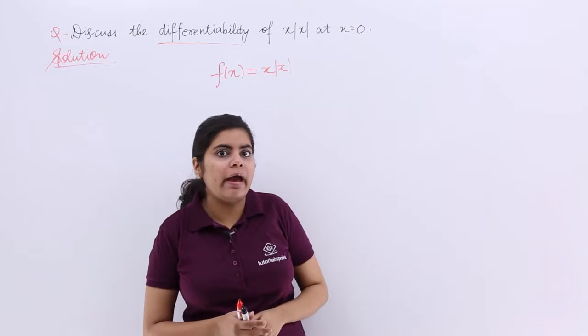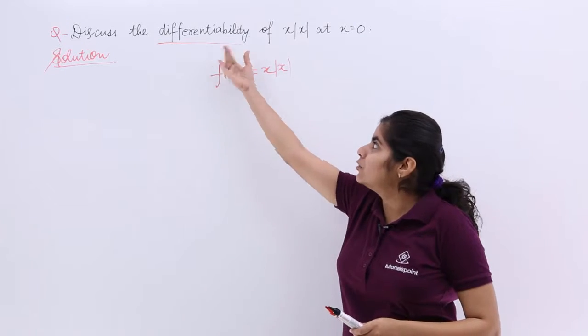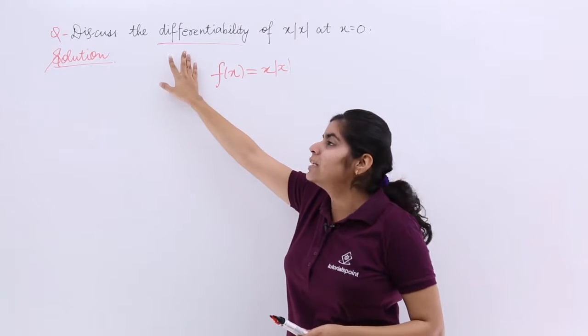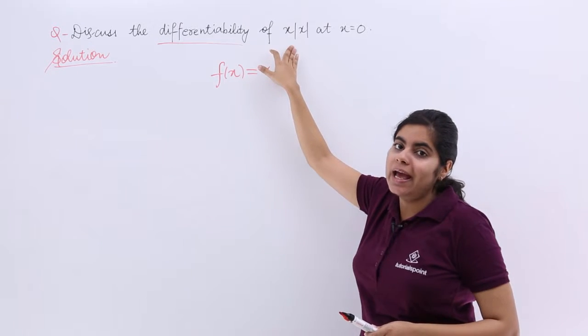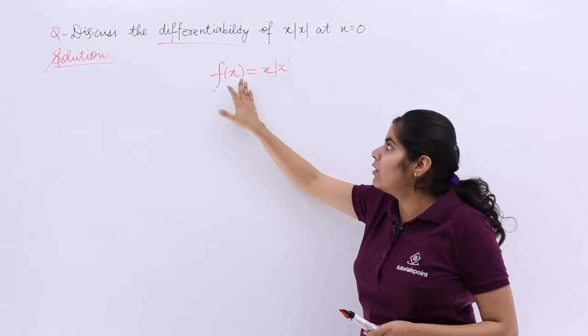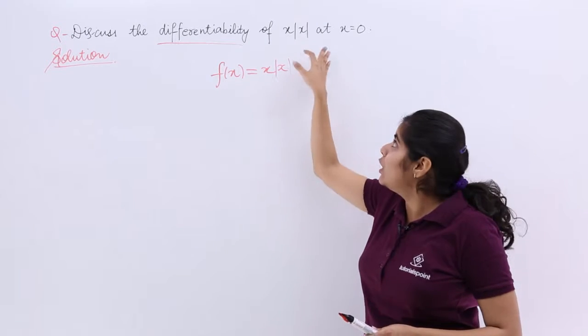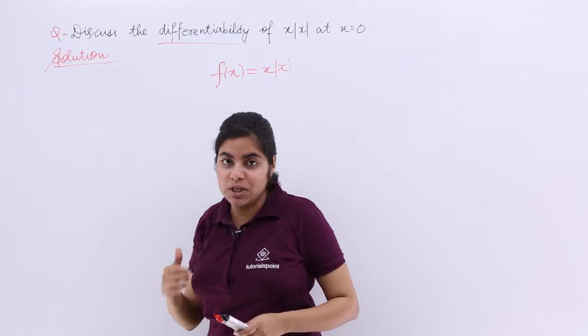So I have a question and that question is discuss the differentiability. Since it is differentiability, I have already underlined it. Of x mod x, x mod x is my function. I have already written that my f(x) is x mod x. And you have to check it at x is equal to 0.